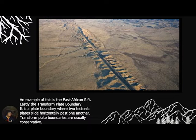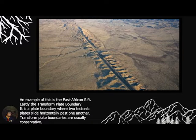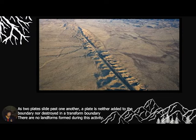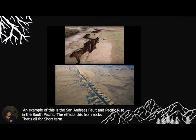Lastly, the transform plate boundary is where two tectonic plates slide horizontally past one another. Transform plate boundaries are usually conservative — as two plates slide past each other, crust is neither added nor destroyed at the boundary. In a transform boundary, no new landforms are typically created. An example is the San Andreas Fault.